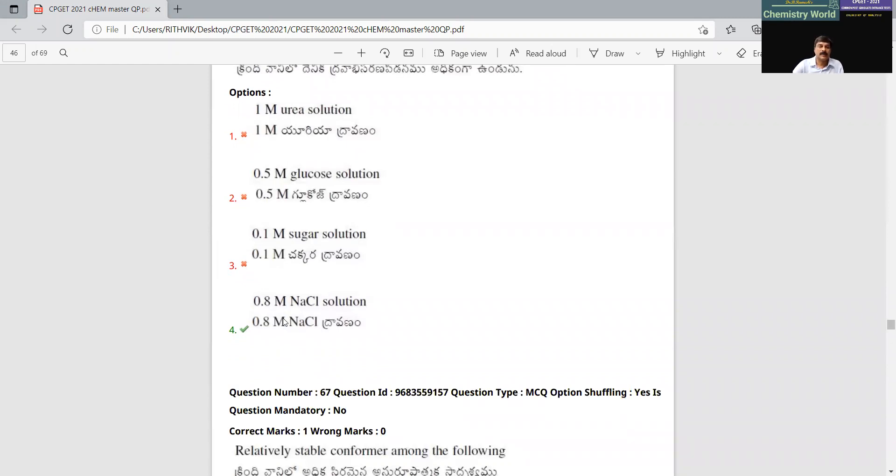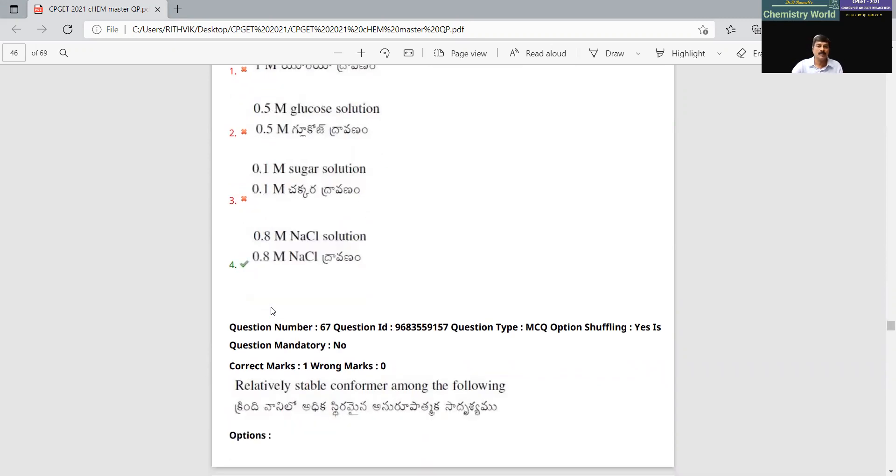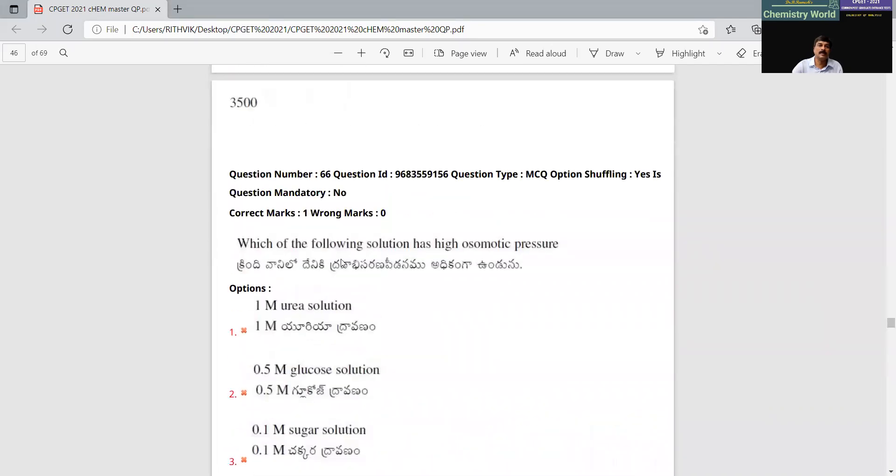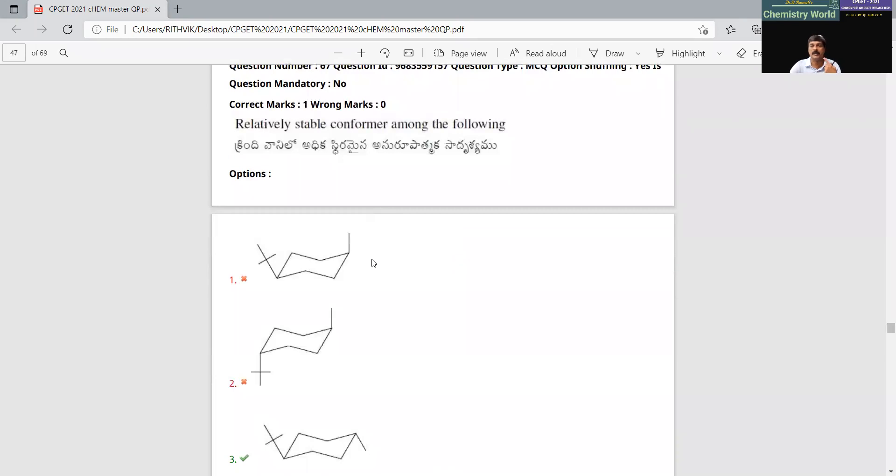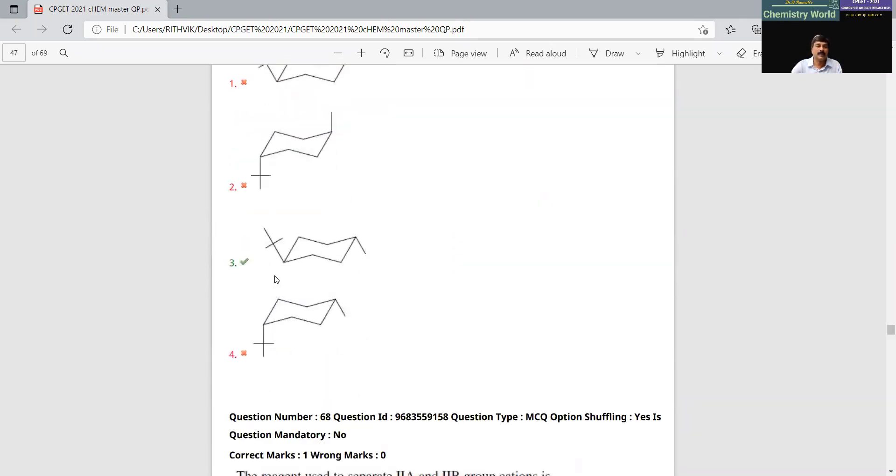Here, as you have studied in your regular class, all these will ionize. We have more number of particles. Basically, colligative property is directly proportional to the number of particles. It depends upon the number of particles. This will ionize into two species each. This will give one. Naturally, this is going to give more number of particles. Any freezing point depression, elevation in boiling point, any colligative property that depends upon the number of particles.